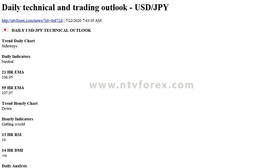Interested in USDJPY technicals? Check out the key levels. R3: 107.91. R2: 107.64. R1: 107.22. PP: 106.95. S1: 106.54. S2: 106.27. S3: 105.85. Updated July 21st, 2020 00:00 GMT. Full study available.